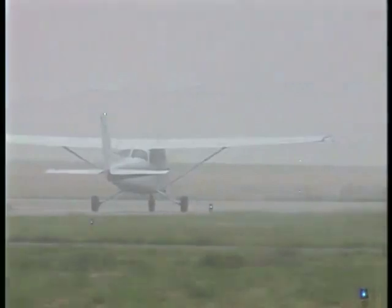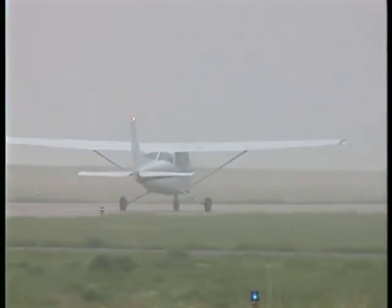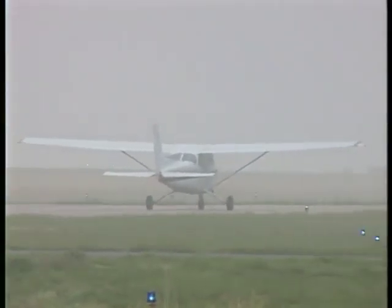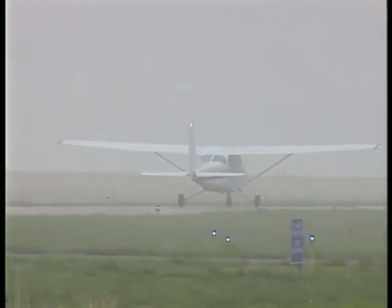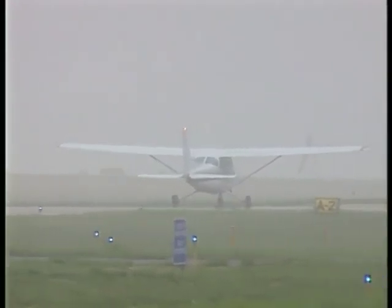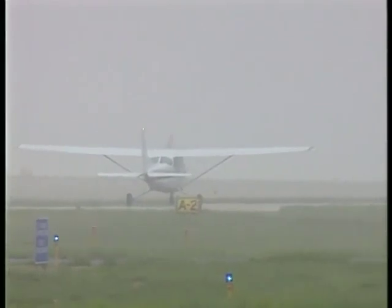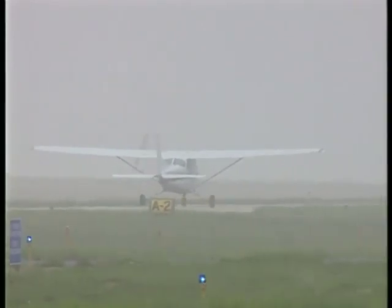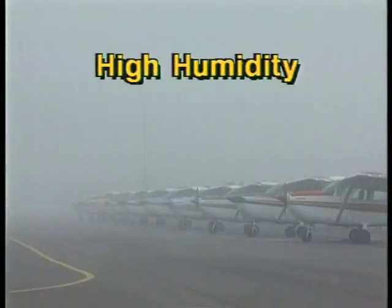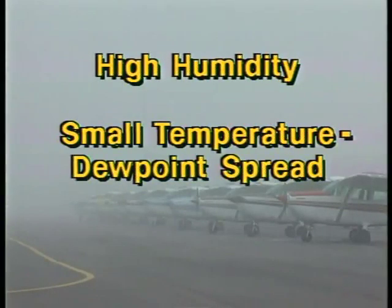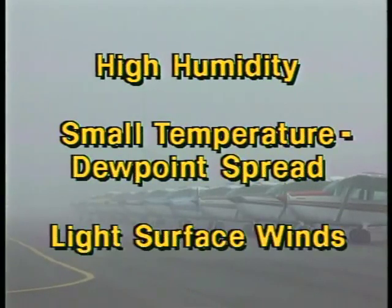Fog is one of the most persistent weather hazards and is frequently the cause of surface visibilities being less than three miles. It can form rapidly changing from VFR to IFR conditions in just a few minutes. Anytime you have high humidity, a small temperature dew point spread, and light surface winds, you should anticipate fog and have an alternate course of action if it does occur.